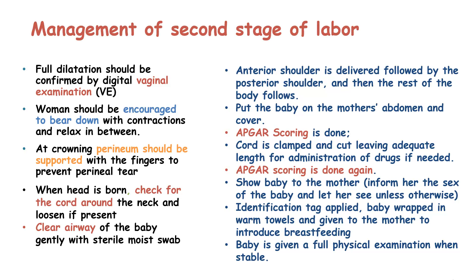Full dilation should be confirmed first by digital vaginal examination. The woman should be encouraged to bear down with contractions and relax in between. At crowning, the perineum should be supported with the fingers to prevent any perineal tear. When the head is born, you check for the cord around the neck and loosen it if present. Then you clear the airway of the baby gently with a sterile moist swab. The anterior shoulder is delivered first, followed by the posterior shoulder, and then the rest of the body follows. We put the baby on the mother's abdomen, cover the baby, and do the Apgar scoring.